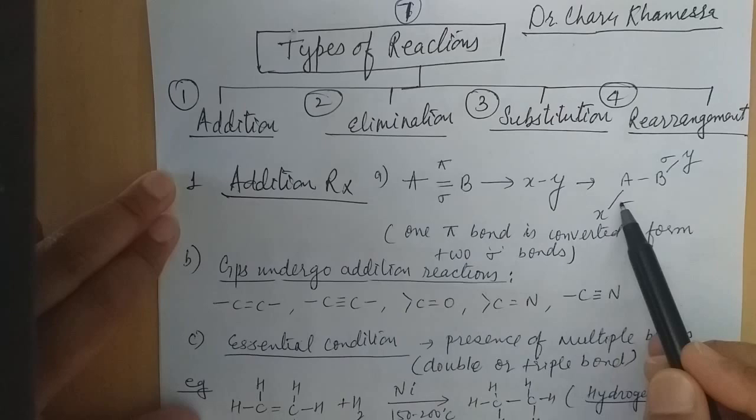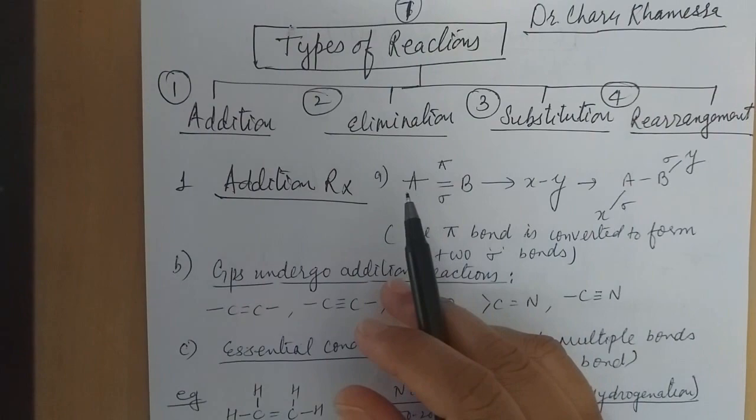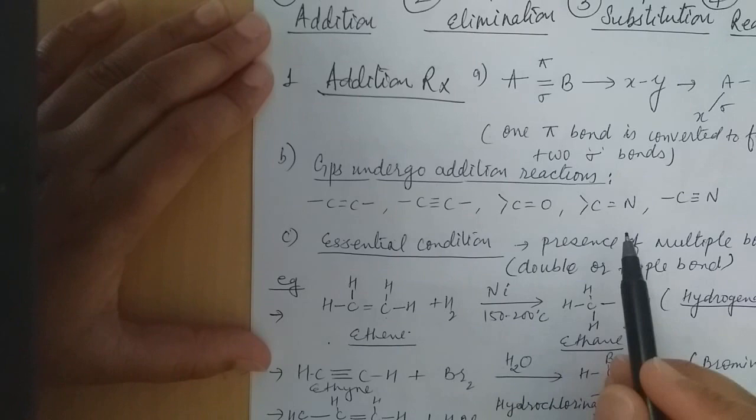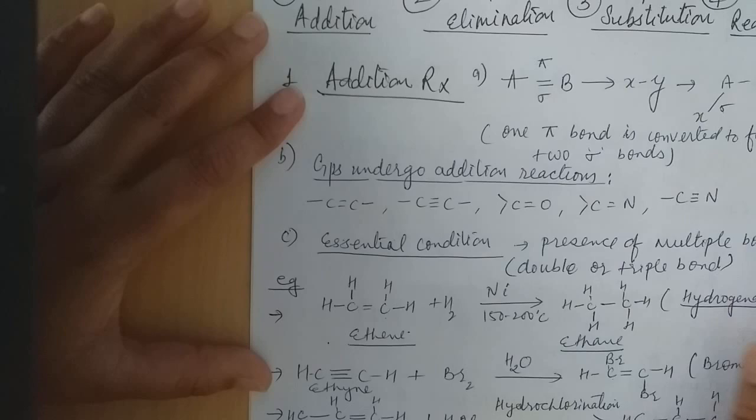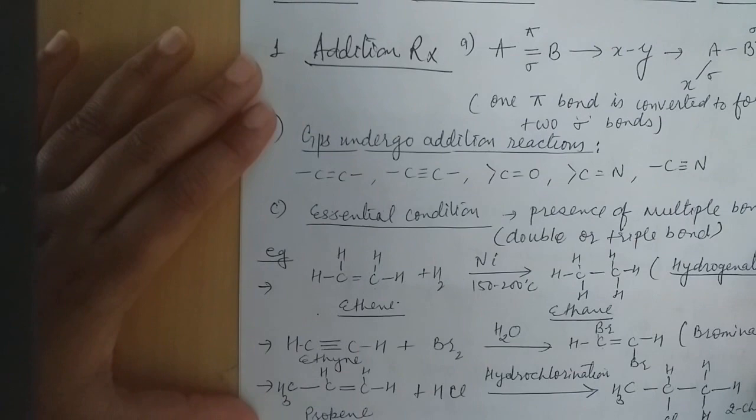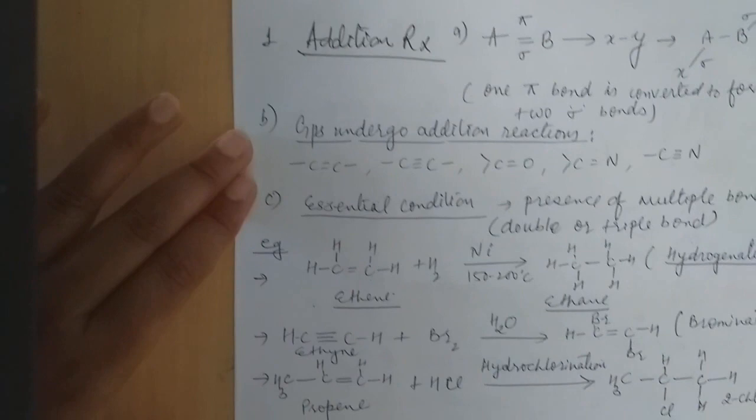Addition reaction are those in which the pi bond breaks. Due to the pi bond breaking, sigma bond formation occurs. Addition reaction is generally shown by compounds which have double bonds — for example, alkenes, alkynes, carbonyl compounds, nitriles, cyanides — which possess the pi bond in them. The essential condition is the presence of a multiple bond, double bond, or triple bond for the addition reaction.